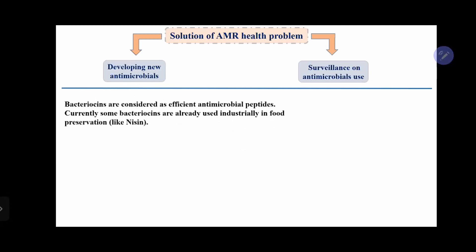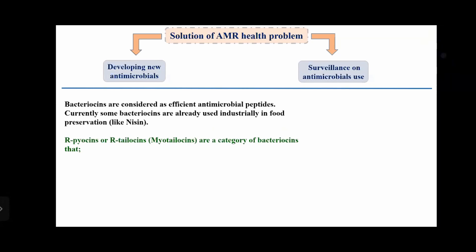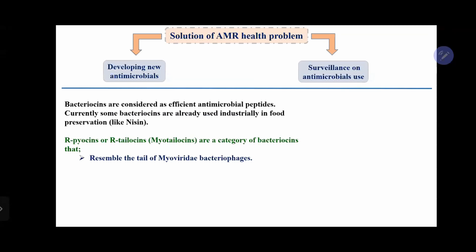I'd like to talk about one of the target antimicrobials: bacteriocins. Bacteriocins are a category of antimicrobials — peptides produced by bacteria to kill related species to the producer strain. Currently, some bacteriocins have already been used industrially in food preservation, like Nisin. R-pyocins, or R-tellocins, the subject of today's study, have specific characters. They are similar to the tail of myoviral bacteriophage, as we see here in this picture.